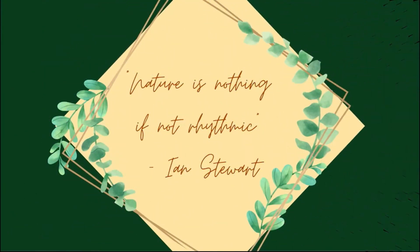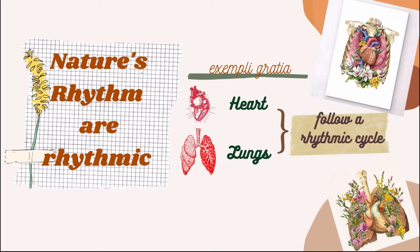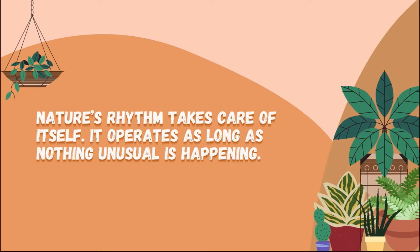Nature is truly nothing if there is none that performs in a rhythmic pattern. As we observe and listen with our own human senses, we can tell that there are many rhythms in nature. These rhythms can be found inside the human body. Examples are the heart and lungs that follow a rhythmic cycle. The heart performs heartbeat and the lungs move to create a breathing pattern. As quoted by Ian Stewart's Nature's Numbers, "Nature's rhythm takes care of themselves, running in a background. It operates as long as nothing unusual is happening."